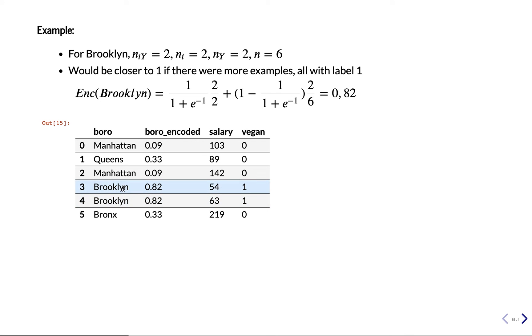Two cases, which is not a lot of support. So if you would have more and more cases, like if you have 10 cases of Brooklyn and they're all associated with vegan, this will become very close to one.